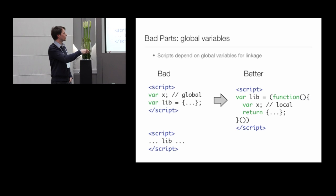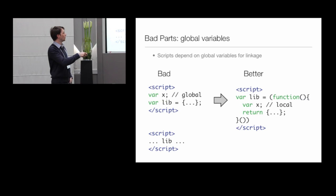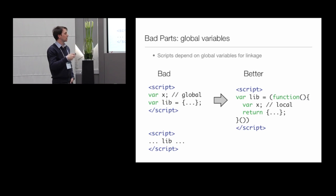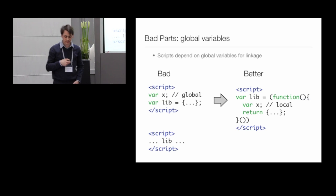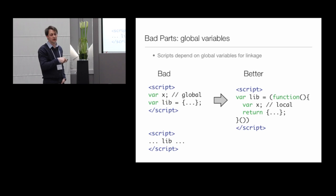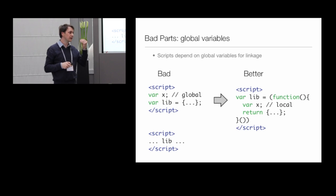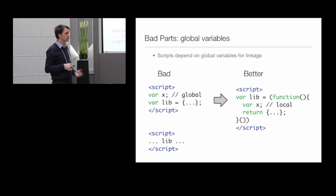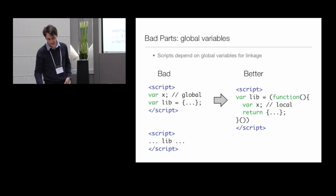The function returns an object that is the public API of that library, and only the methods inside that object will be visible to other scripts. So lib is still a global variable, but these are well-known names that refer to libraries — they don't refer to internals.